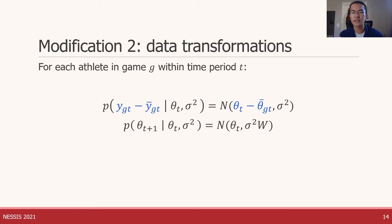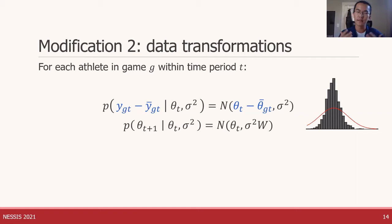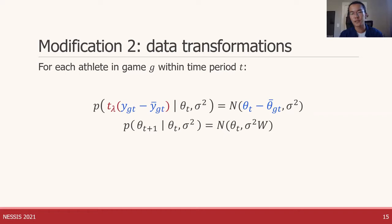The second concern is bigger and it's with the model itself. The normal distribution in the likelihood might raise some alarms — we pick it for ease of computation, but in general we might suspect that athletes' relative scores are not normally distributed around the relative latent ability parameters, particularly because we're applying this model to all sorts of sports. When we try fitting this DLM to some data and compare a histogram of our standardized residuals to the normal distribution curve, we can see the residuals are definitely not normal. This problem of a misspecified normal likelihood was the main problem we set out to tackle, and we do so using transformations.